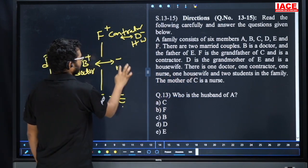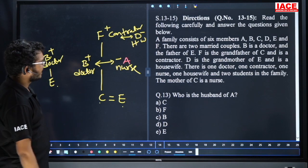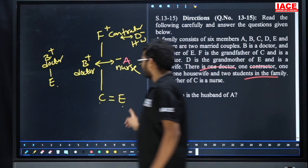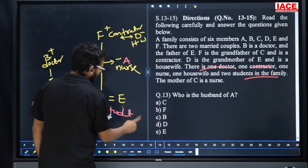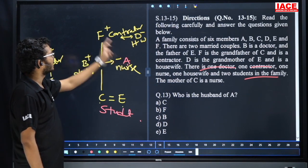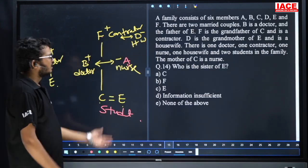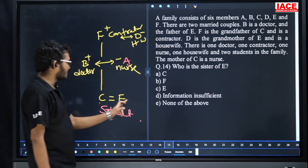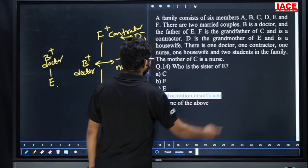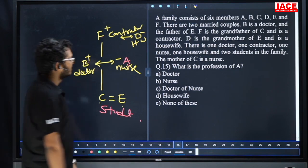B is a doctor; mother of C is a nurse — so that person (A or the spouse of B) is a nurse. C and E are both in the third generation and are siblings; both are students. Remaining alphabet A is the nurse. Question 13: who is the husband of A? Answer is B, option C. Question 14: who is the sister of E? We can't determine the gender of C, so answer is data insufficient, option D. Question 15: profession of A is nurse, option B.